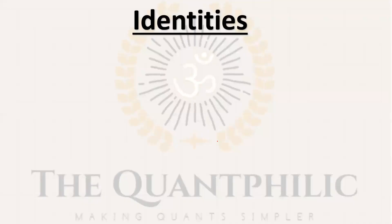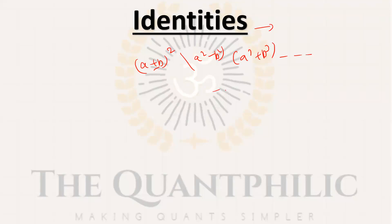Let's start. The first chapter for algebra is identities. You have to learn the primary identities: (a±b)², a²-b², and the cube ones — a³+b³ and a³-b³. Direct questions may not come from this, but application-based questions will come.